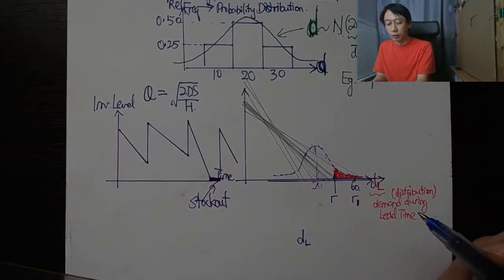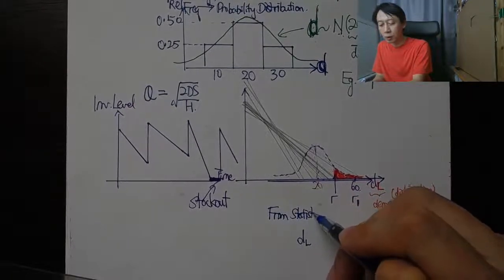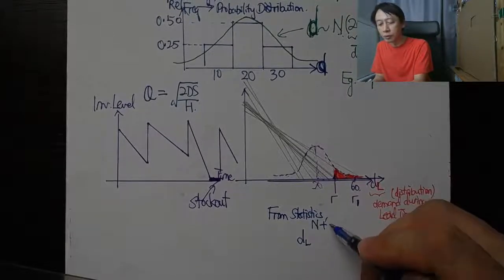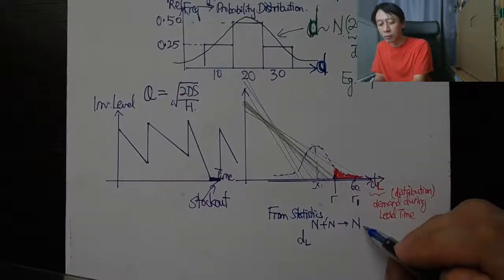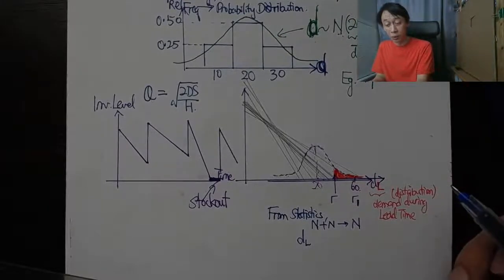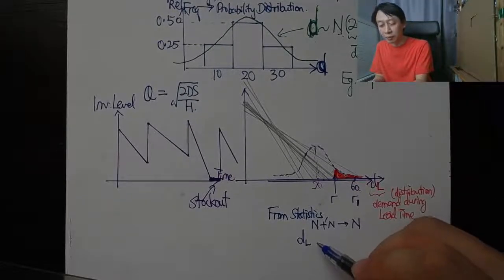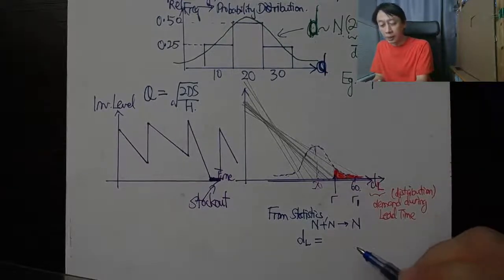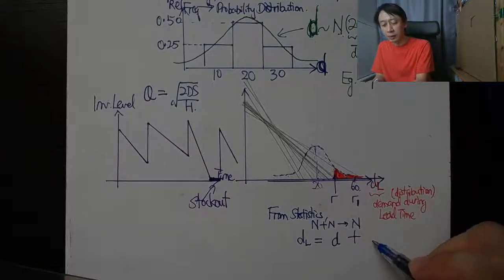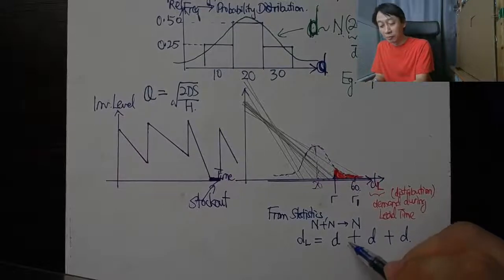So we know that in statistics, from statistics, normal distribution plus normal distribution gives us normal distribution where the mean will add up and if they are independent then the variances will add up as well. The demand during lead time is going to be basically a single day's demand plus a single day's demand but that's another day, plus a single day's demand.